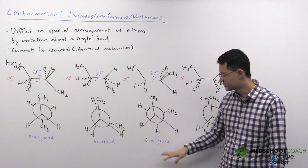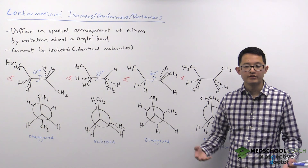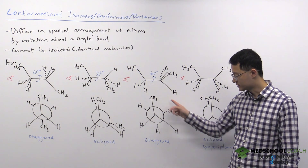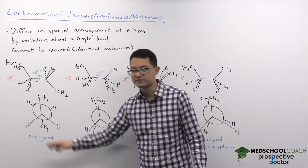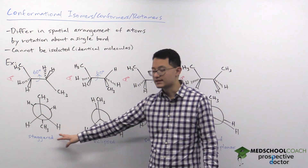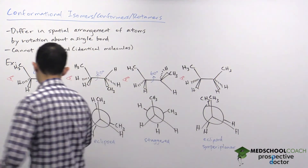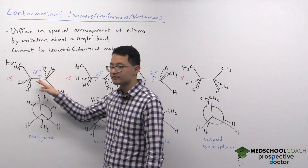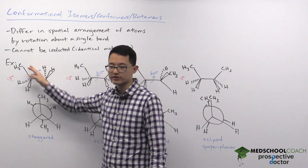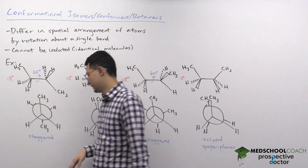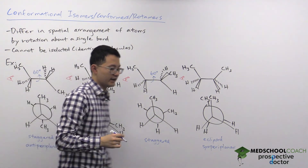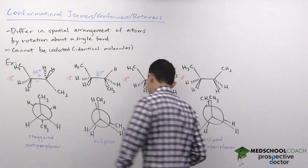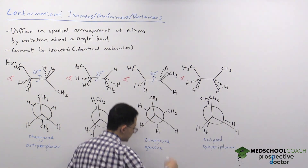Looking at the two staggered conformations, we again focus on the largest substituents — the two methyl groups. In one staggered conformation the methyl groups are closer together, creating a little steric hindrance. In the other, the two largest groups are as far apart as possible, making it the most stable configuration. When the four key atoms are in opposite locations in the same plane, this is called anti-periplanar — or staggered anti. The other staggered conformation is called staggered gauche.